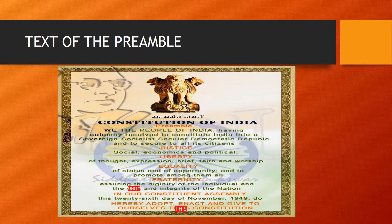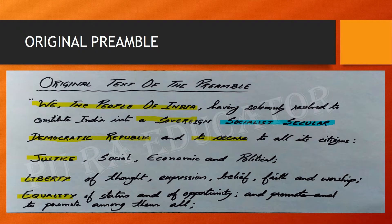Now I will be discussing this Preamble in detail. 'We, the people of India, having solemnly resolved to constitute India into sovereign' — in the Constituent Assembly, the representatives of the people said that we the citizens of India will constitute altogether India into sovereign. Sovereign means India will have its sole authority over its functioning, whether internal or external matters; no other country interrupts in its own matters. Please note that yellow lines represent important terms and blue lines represent terms which were added later on.